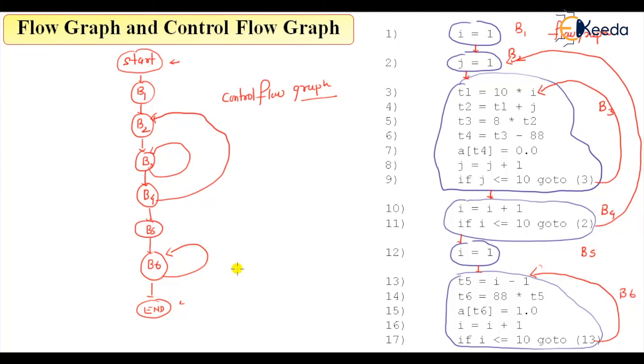So this is your flow graph and control flow graph example and I hope I am clear with this. It is based on the concept of leader, until we get another leader everything belongs to that basic block. So that's all for this discussion, thank you.